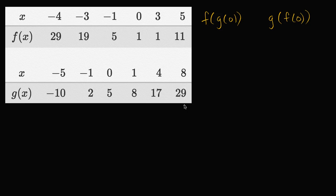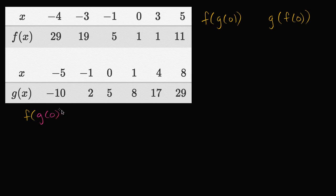Pause the video and see if you can figure it out. Let's first think about f of g of zero. What is this all about? Well, this means that we're going to evaluate g at zero — we're going to input zero into g.